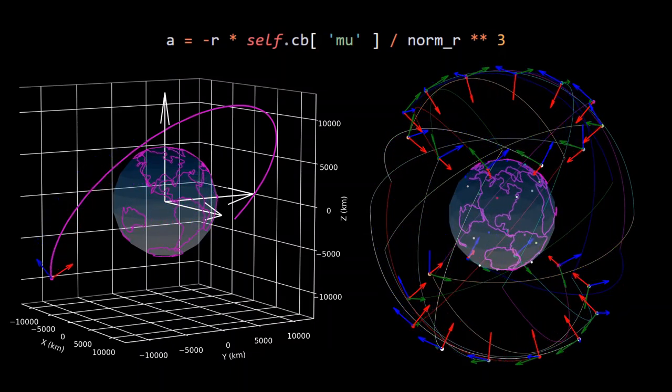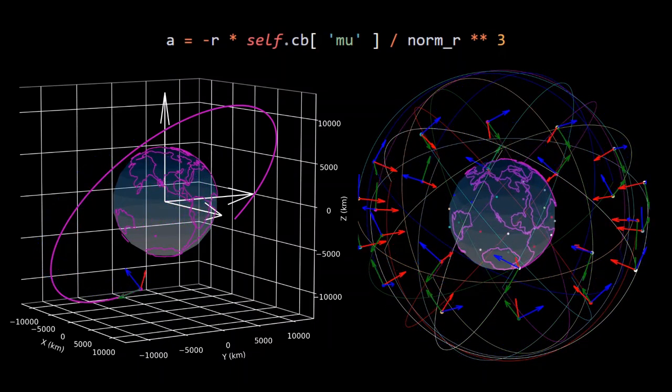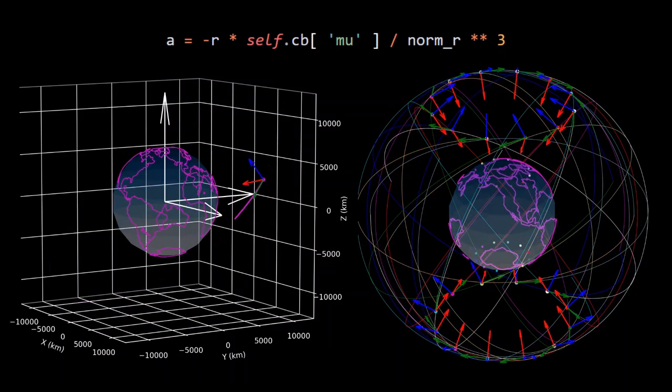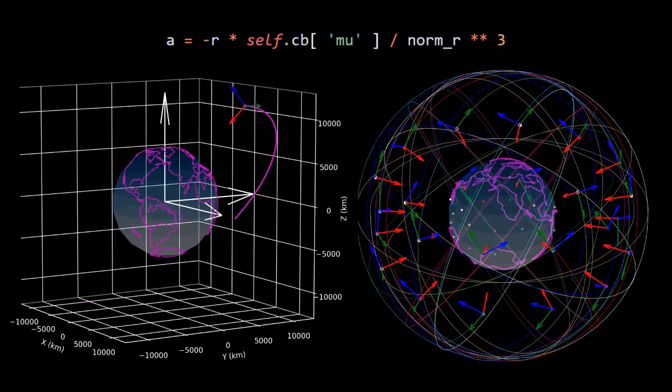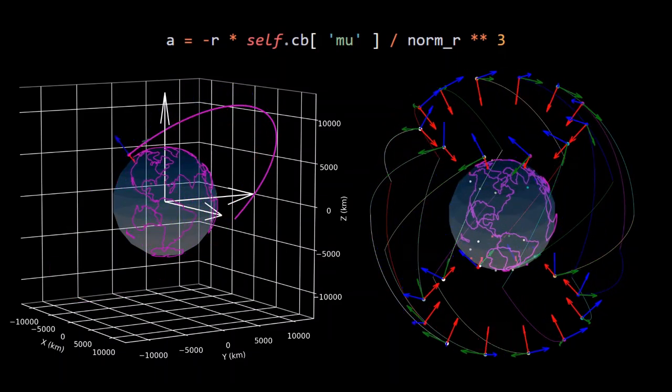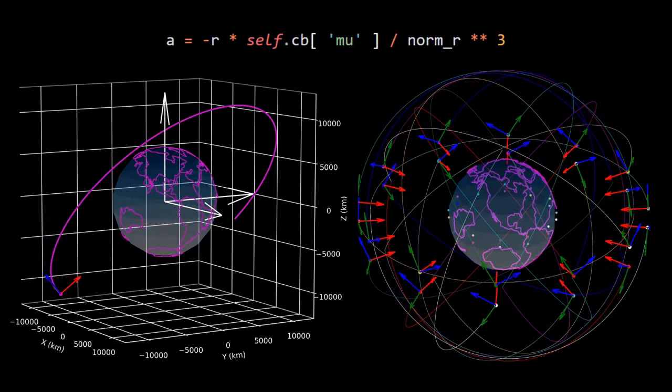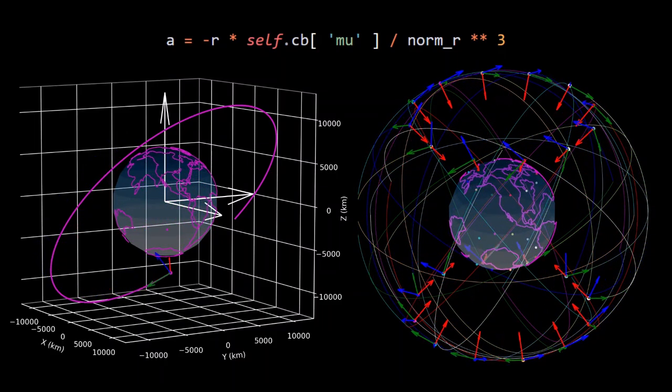The goal of this video is to provide an intuitive understanding of the most fundamental equation in all of orbital mechanics, which is Newton's Universal Law of Gravitation as a scalar and vector equation.